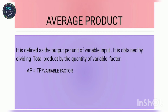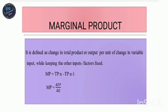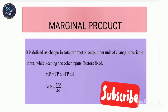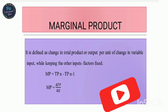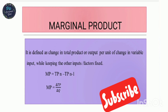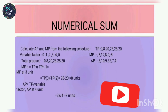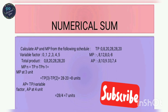Average Product equals Total Product divided by the quantity of variable factor. Marginal Product is the output per unit of change in variable input, while keeping other factors fixed. So when input changes, we find how output changes — that is the Marginal Product. The formula for MP is TPn minus TPn-1, or change in TP divided by change in quantity, where the triangle (delta) symbol represents change.